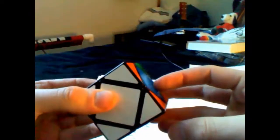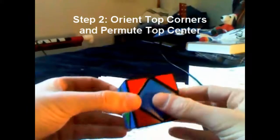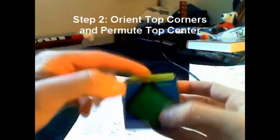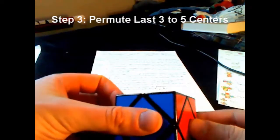This method is comprised of three steps. The first step is to solve the bottom corners, like this. Step two is to solve the top corners and permutate the top center, which in this case is yellow. The third and last step is to solve the last three to five centers.